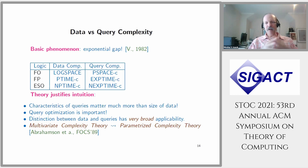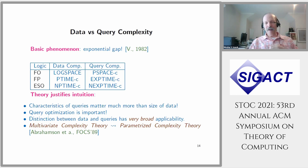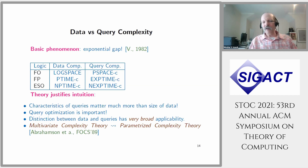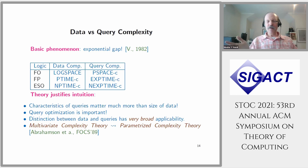This distinction between data and query has very broad applicability and can also be called multivariate complexity, because we have two variables. This gave rise to something that emerged a few years later: in the late 1980s, the first papers on parameterized complexity theory appeared. Parameterized complexity theory was foreshadowed by multivariate complexity theory — you can say that the query itself is a parameter, and the query length is a parameter in the same way.